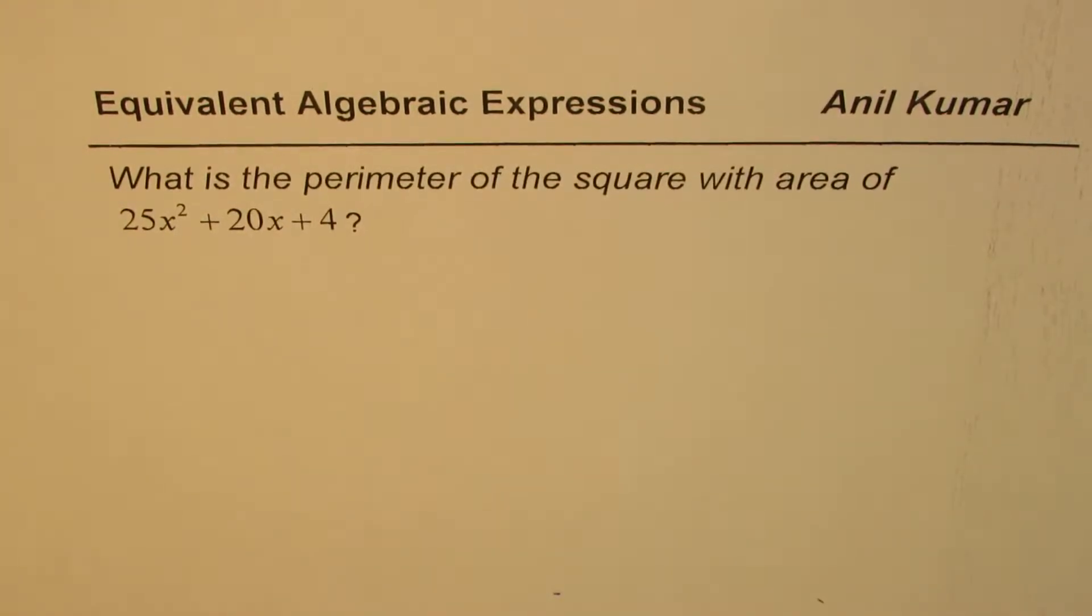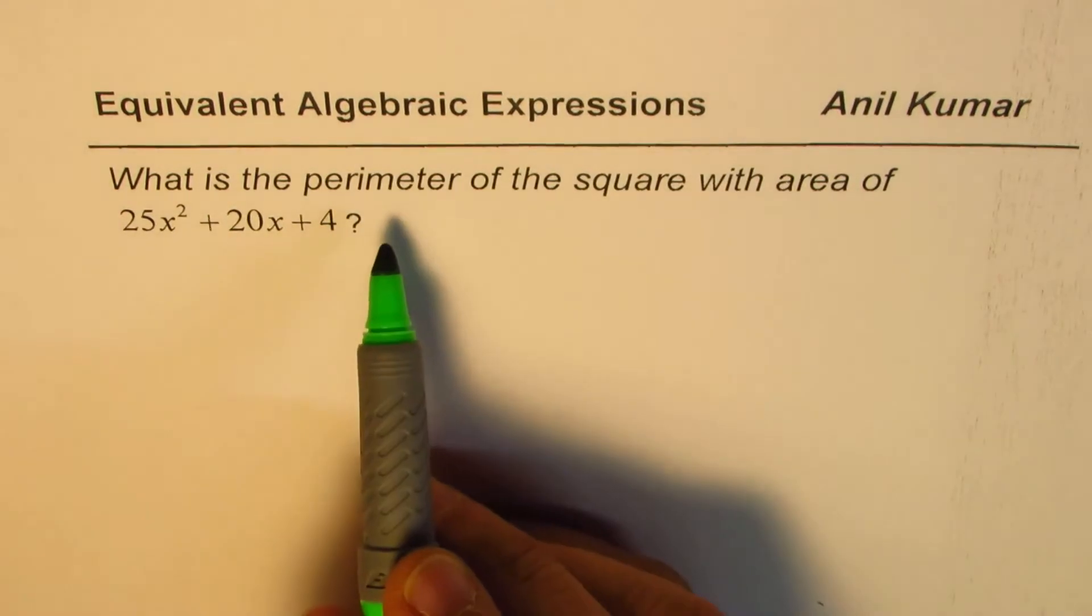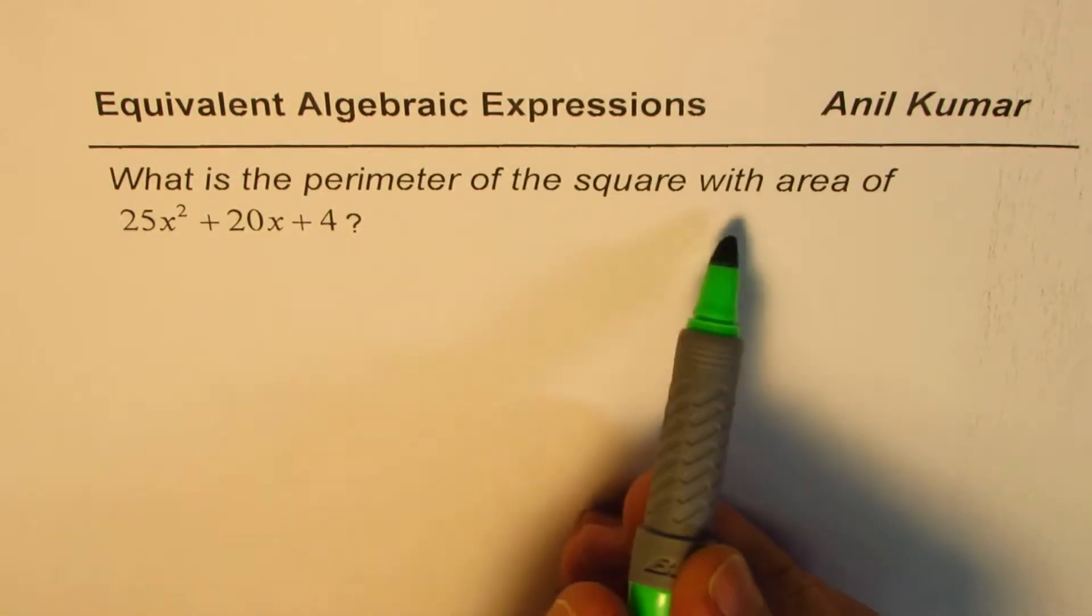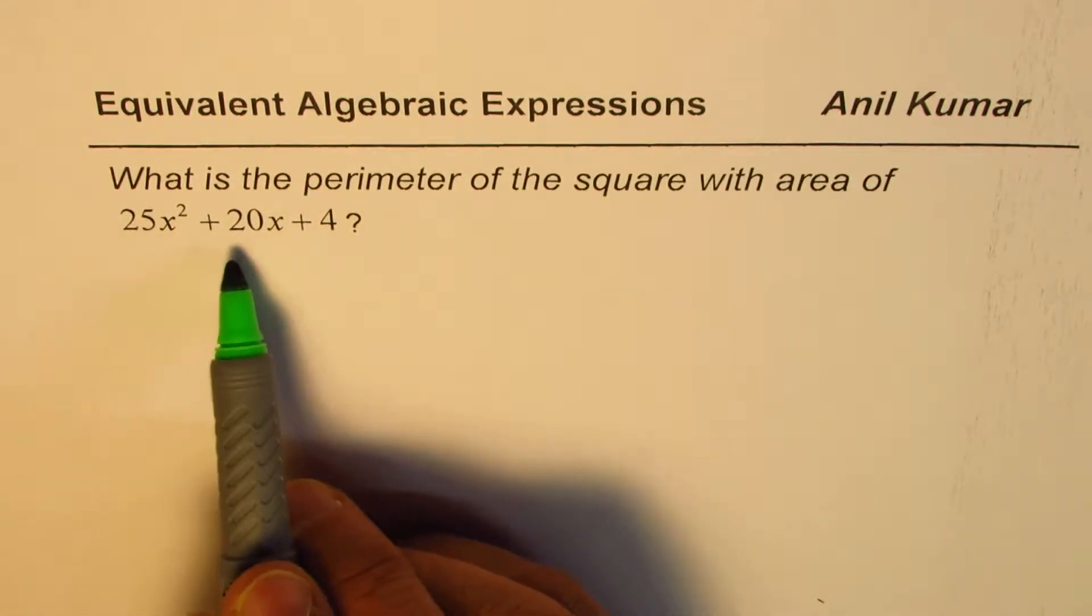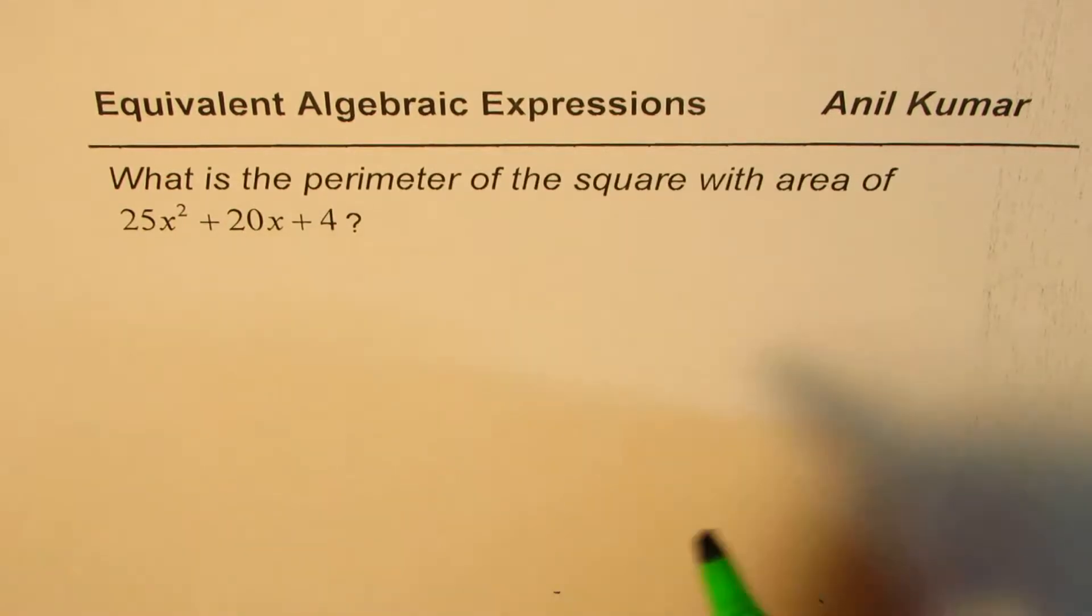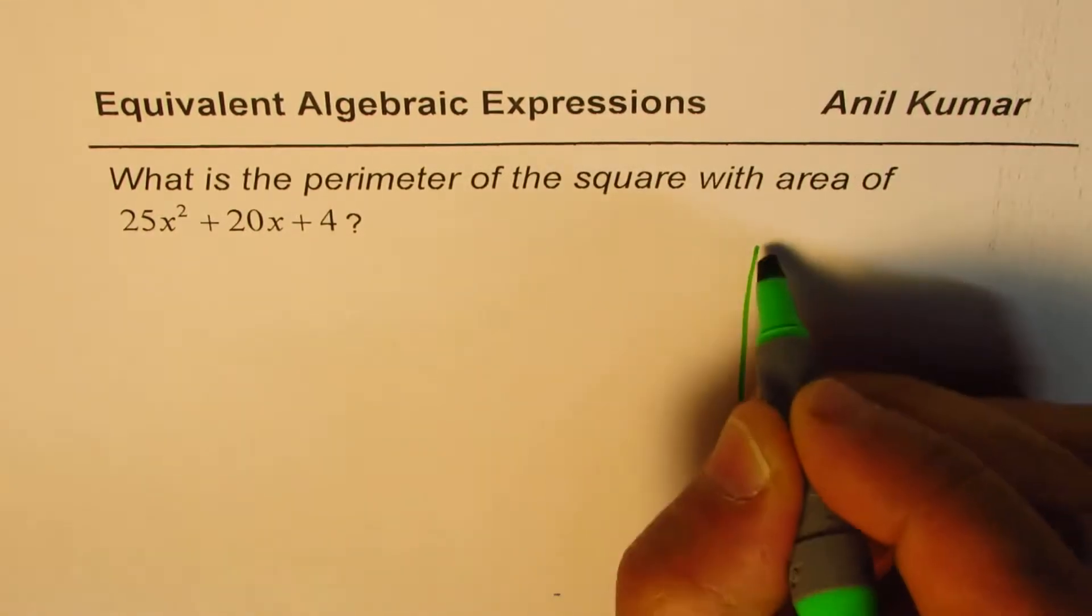I'm Anil Kumar sharing with you some test questions on equivalent algebraic expressions. The question here is: what is the perimeter of the square with area of 25x² + 20x + 4?